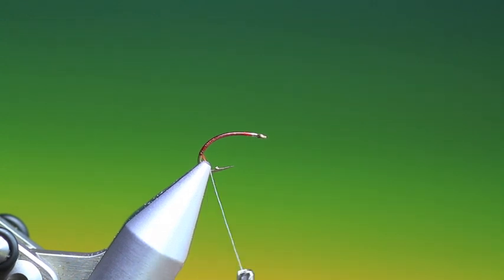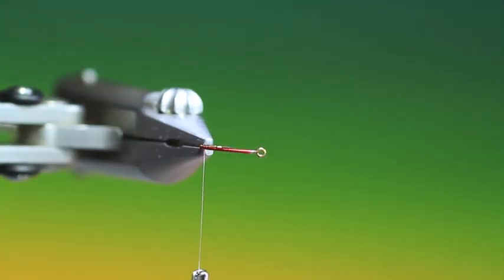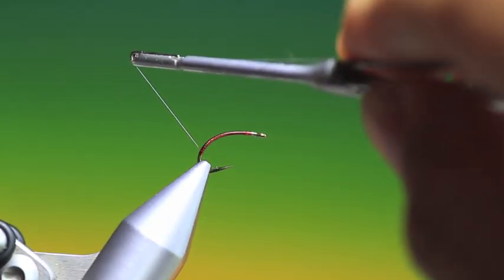Then we spin the thread clockwise to make a rope out of it, all the fibers spinning together. This will be our rib.